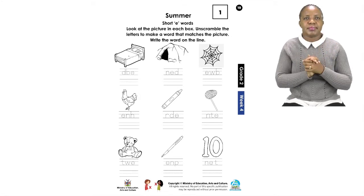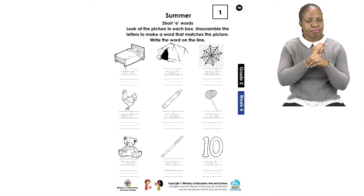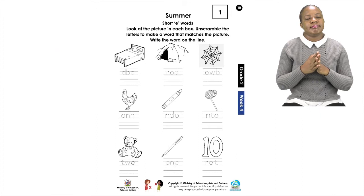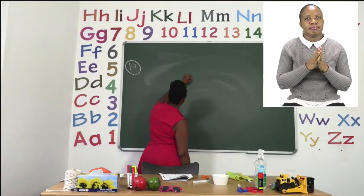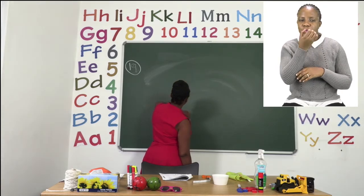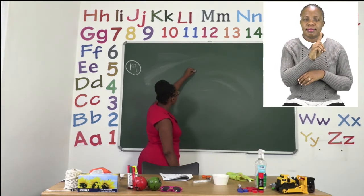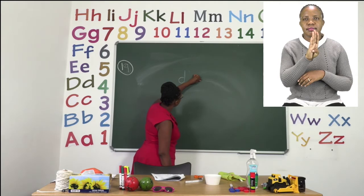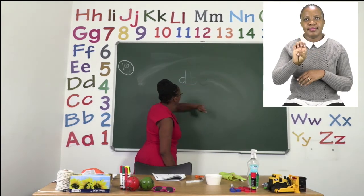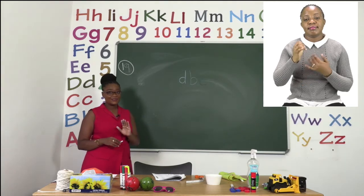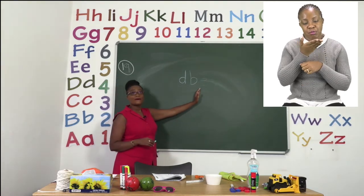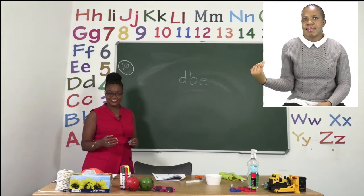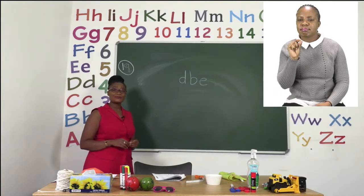The first one that we can see is definitely a bed. Let's try and unscramble it on the board. We have a D, a B, and an E — the sound that we are working on. With these three letters we need to make the word bed. When we say the word, it shows you which letter we are starting with.